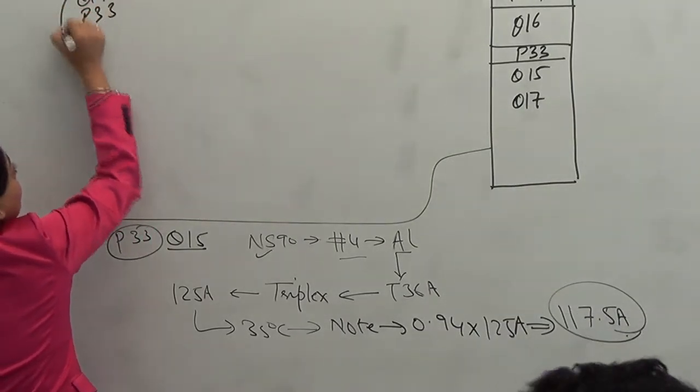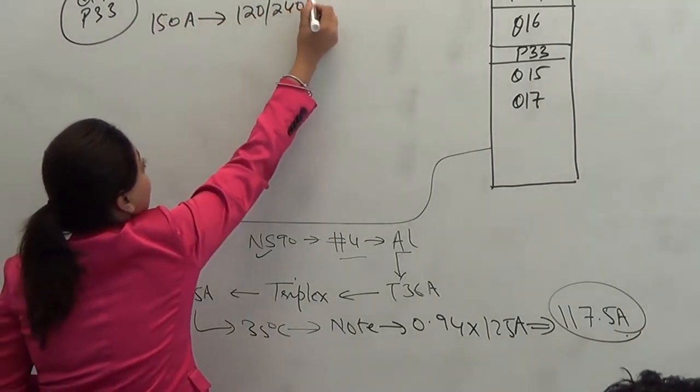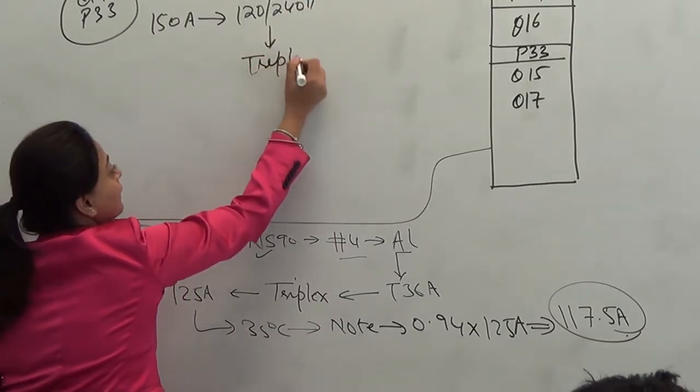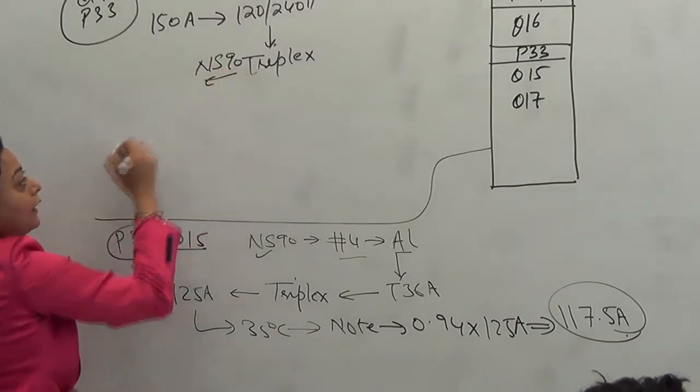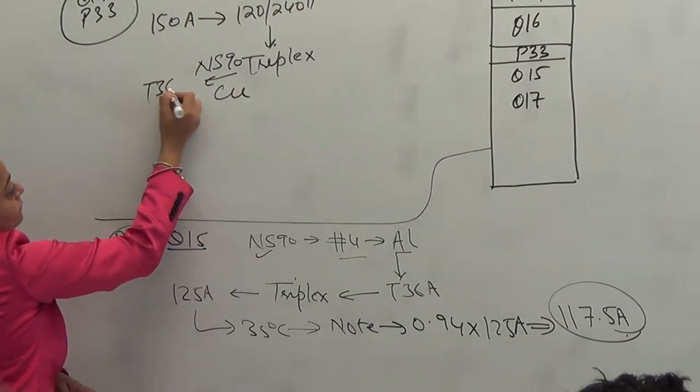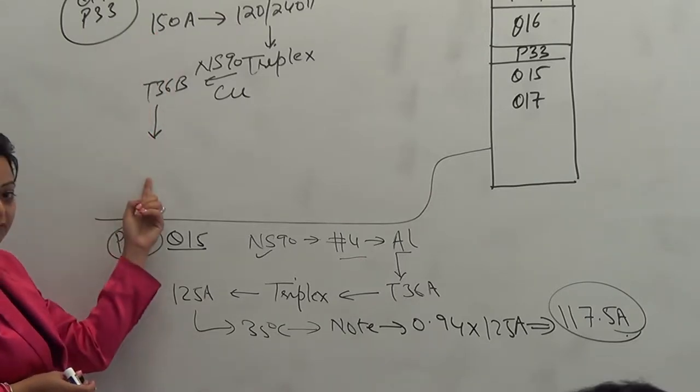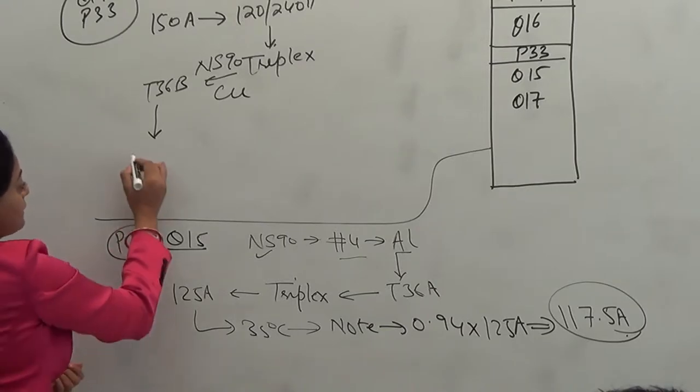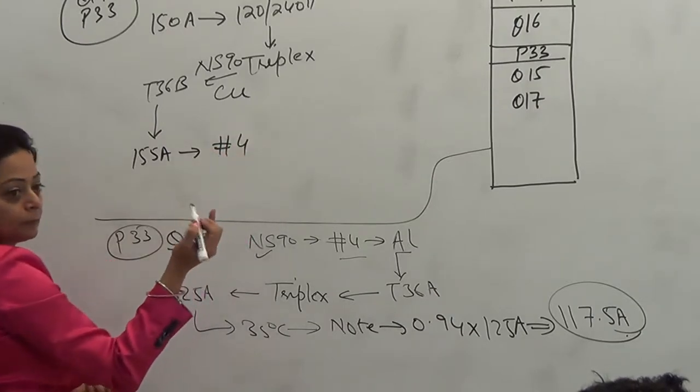In order to supply 150 amps to an outbuilding with voltage requirement of 120/240, that means it is triplex. What size of the NS90 copper neutral supported cable would be required? It's copper, so what table? Copper table is 36B. What's my hazard in NS90 column? There is no other number close by to 150. 155 amps. That refers to? Number 4.